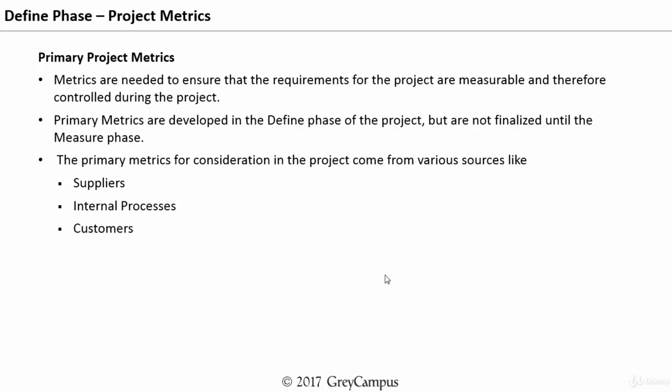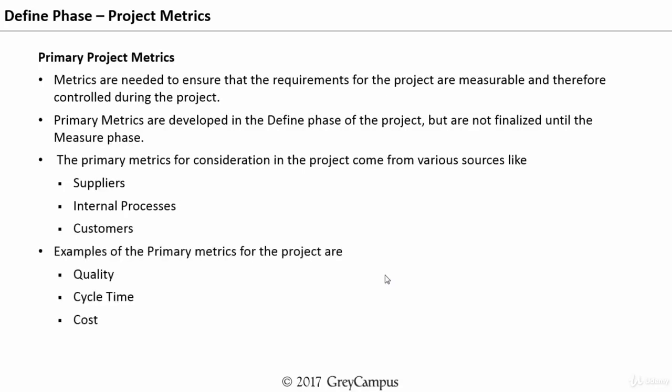Whenever we are doing a Six Sigma project, we need to define the metrics. We categorize them into primary project metrics and secondary project metrics. The primary project metrics are the metrics which are needed to ensure that the requirements of the project are measurable and therefore controlled during the project.